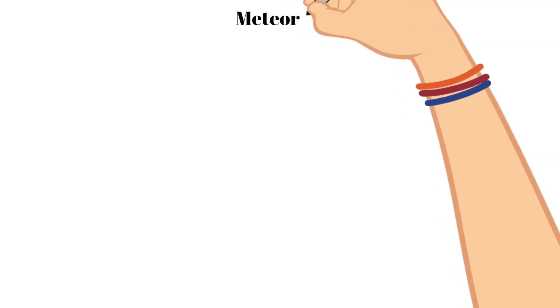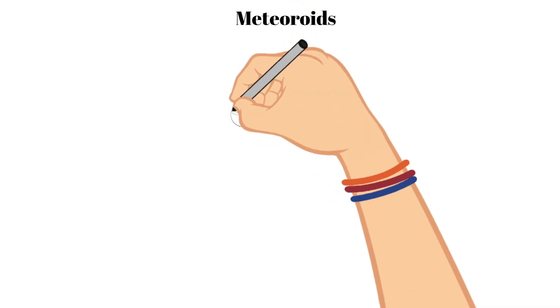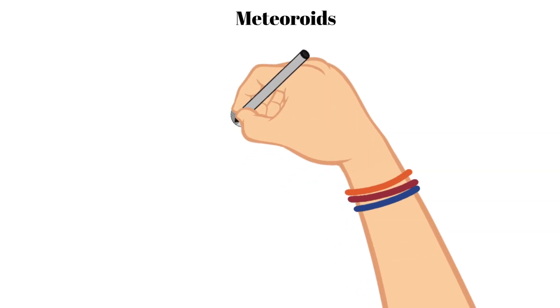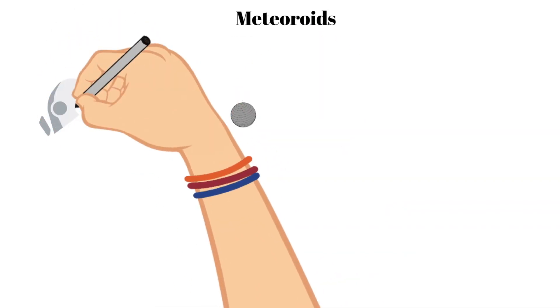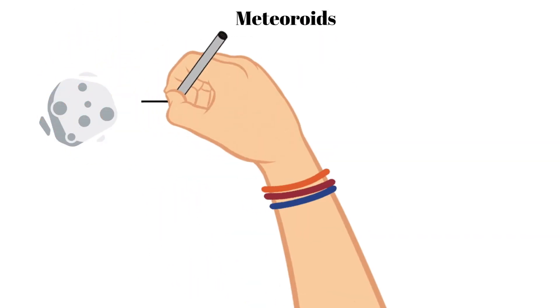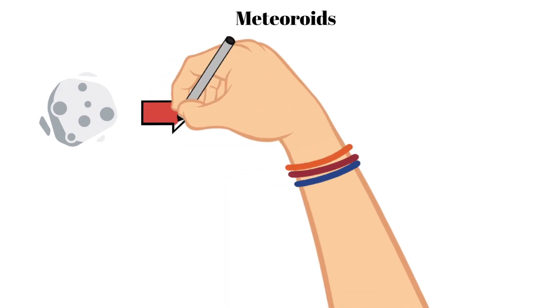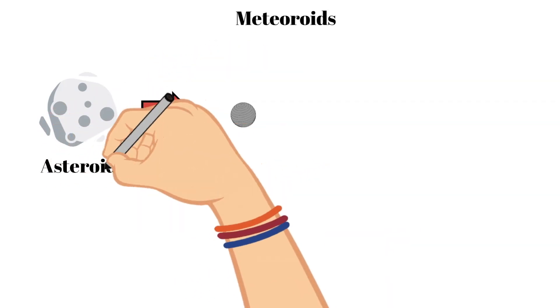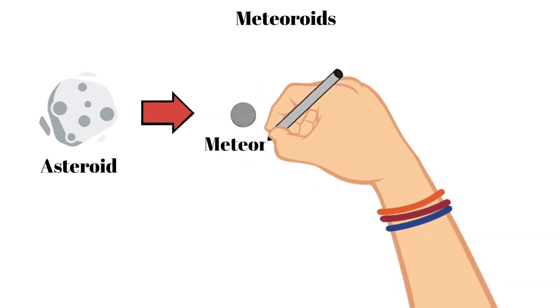Now the next body that we are going to talk about is meteoroids. What is a meteoroid and how is it different from an asteroid? Well, a meteoroid is simply a small piece of an asteroid or comet, which we will talk about later, and it is typically pebble-sized.